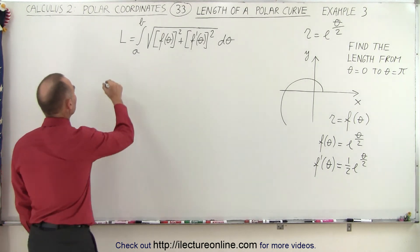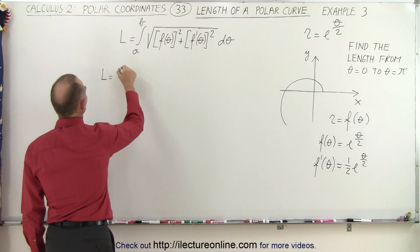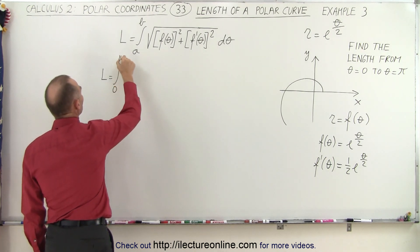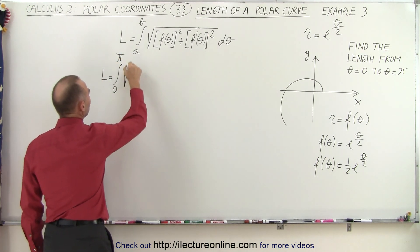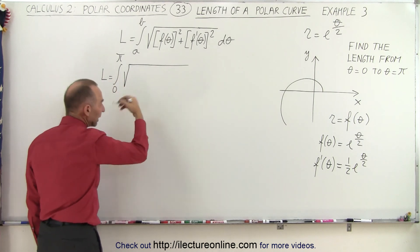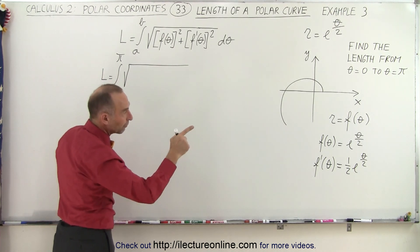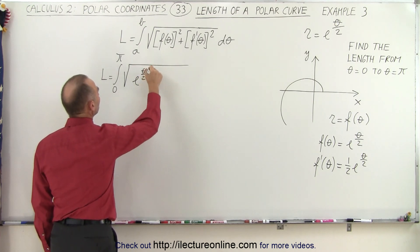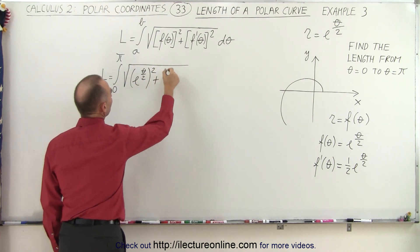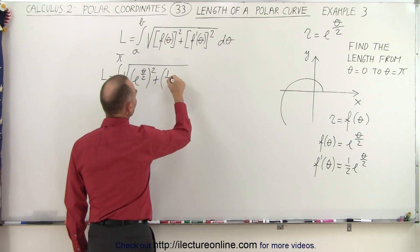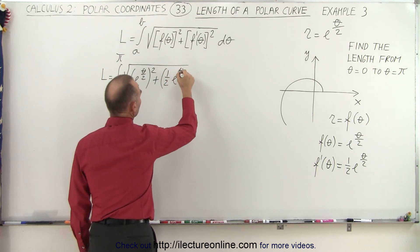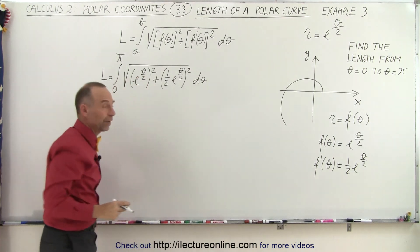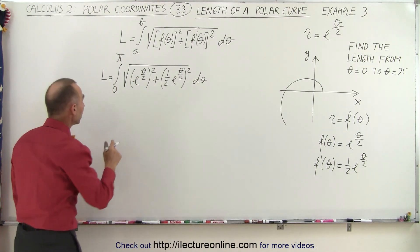Let's go ahead and plug it in. The length is equal to the integral, the limits are from 0 to pi, times the square root of the function squared, which is e to the theta divided by 2 quantity squared, plus 1 half e to the theta over 2 quantity squared, times d theta. Let's go ahead and square those and see what we end up with.